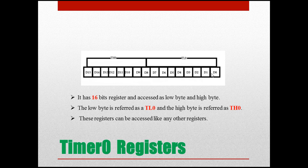The 16-bit register spans from bit 0 to bit 15. The lower byte covers bits 0 to 7, and the higher byte covers bits 8 to 15. So timer 0's lower byte is TL0 (bits 0–7) and the higher byte is TH0 (bits 8–15).